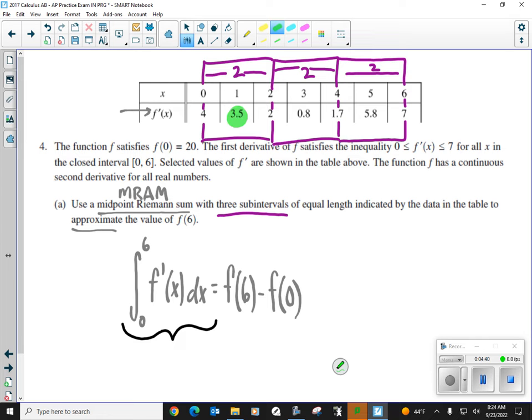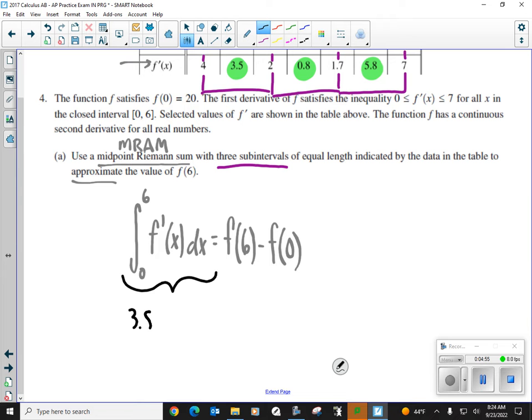Okay, width of two, width of two. That's a width of two. All right? So if I'm using M-RAM, I'm going to take the middle value, the middle value of each partition or subinterval, 3.5 is the middle. It's in between two and four. 0.8 and 5.8. All right? I'm going to add those up and I got to multiply by the width, which is two. So I'm going to take 3.5 plus 0.8 plus 5.8.